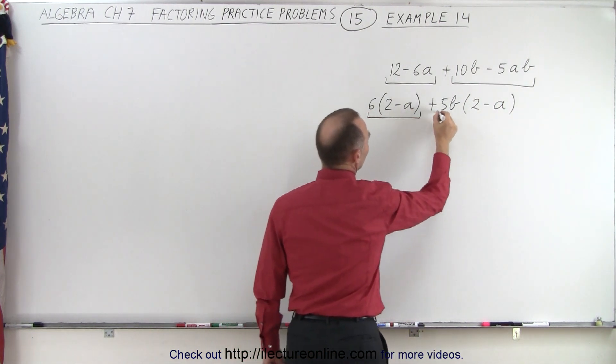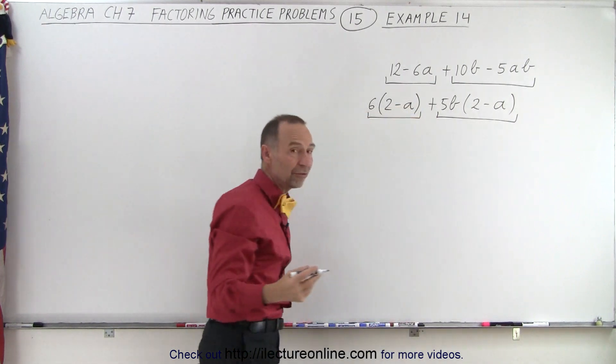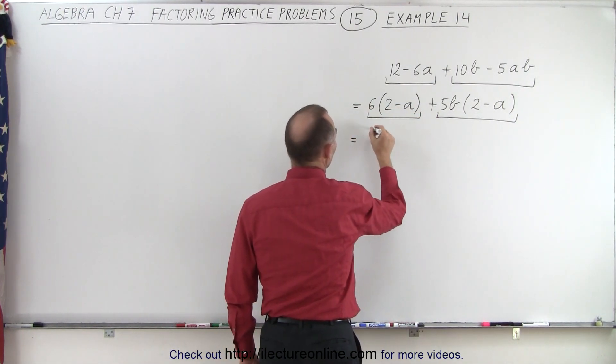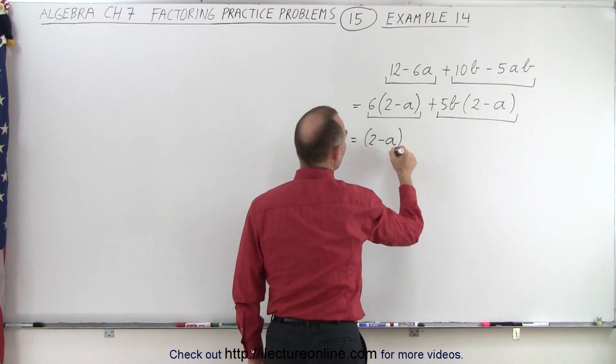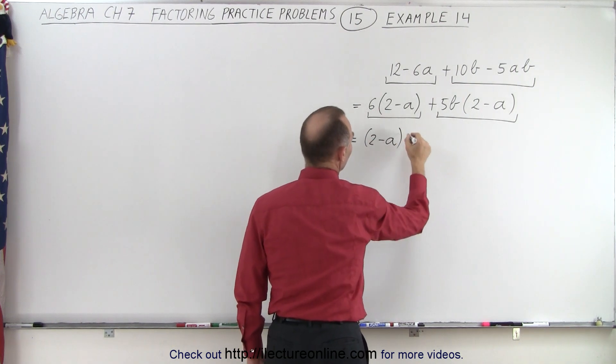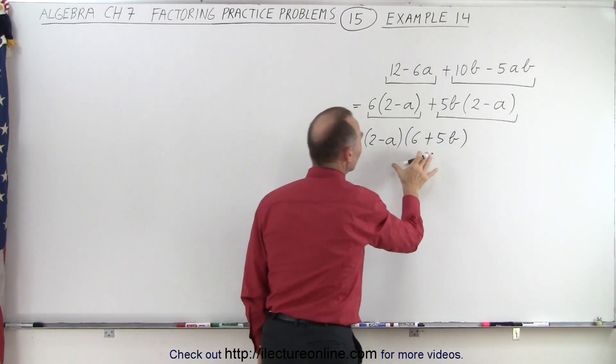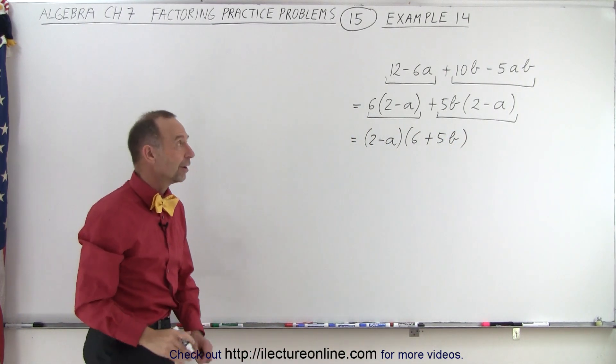And notice, now when we have two terms here, they each contain the common factor 2 minus A, which can be factored out. So this is 2 minus A. When we factor out 2 minus A, we have left a 6 plus a 5B. And notice, that's the factored form of our initial problem.